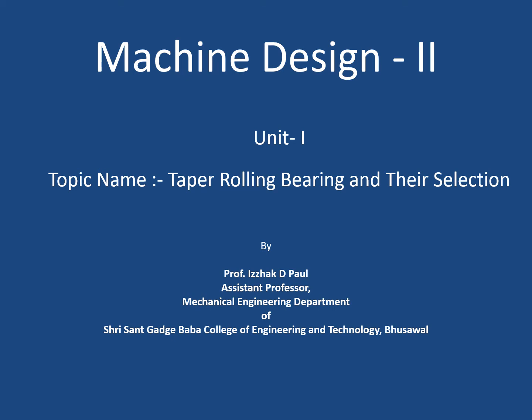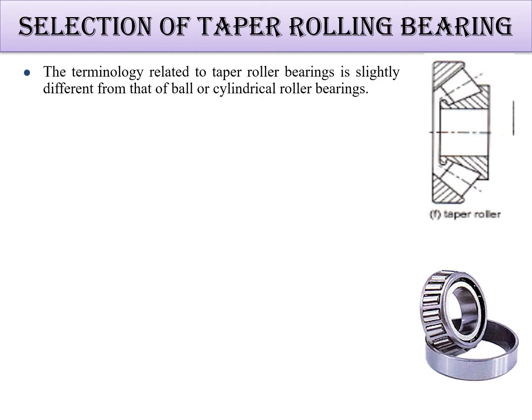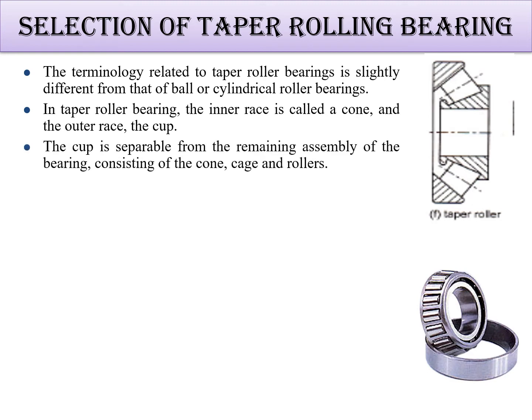The next topic is tapered roller bearing selection, which is based on construction type. A tapered roller bearing is basically conical in shape. The inner race is called a cone and the outer race is called a cup, and both are separable.